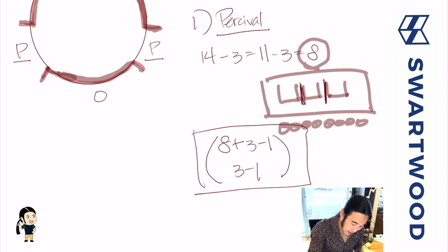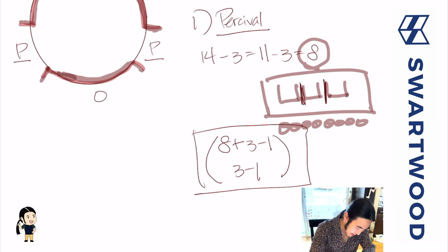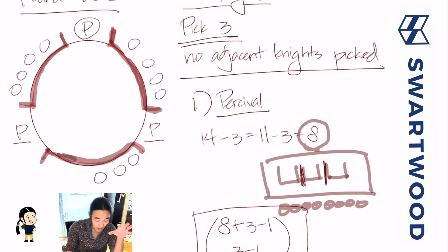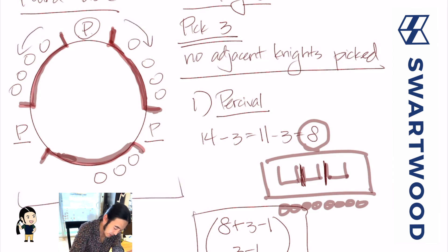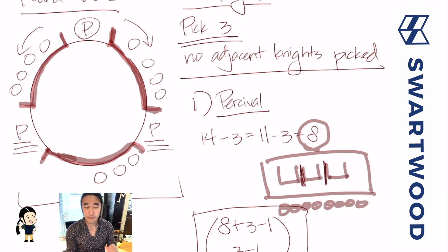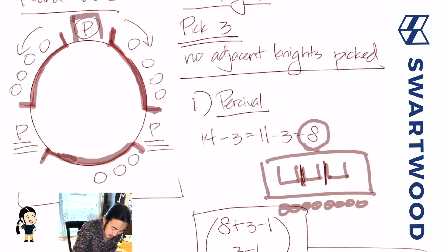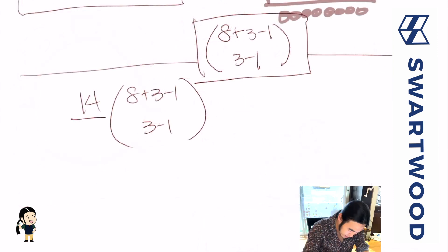We've set everything up and know exactly where the knights sit. Say we place the eight as one, two, three, four, five, six, seven, eight - that places all the knights in a certain order. If we know who Percival is and how many are to the right and left of him before we get to picked knights, we know what the ranking looks like. The slight problem is we needed Percival to be distinguished - we assumed he's a special knight - but it could have been any of the 14 knights. So we take this number and multiply by 14.